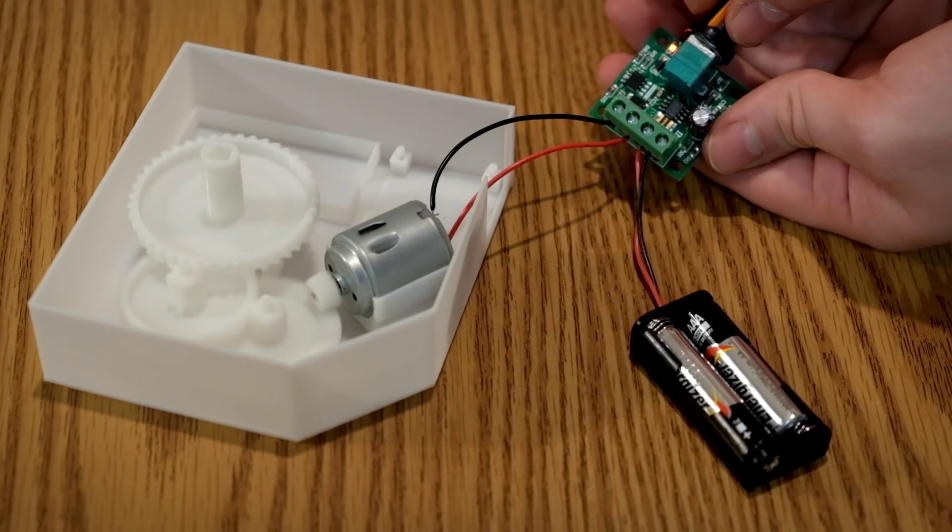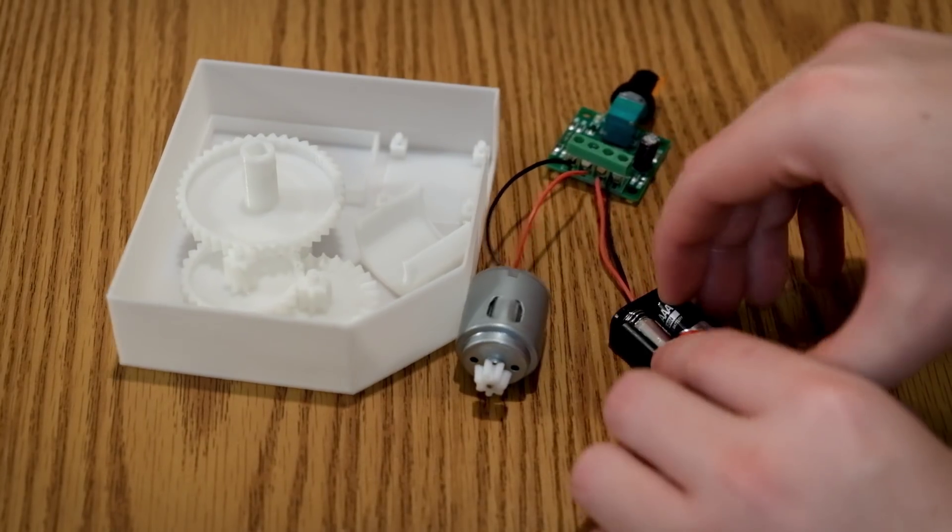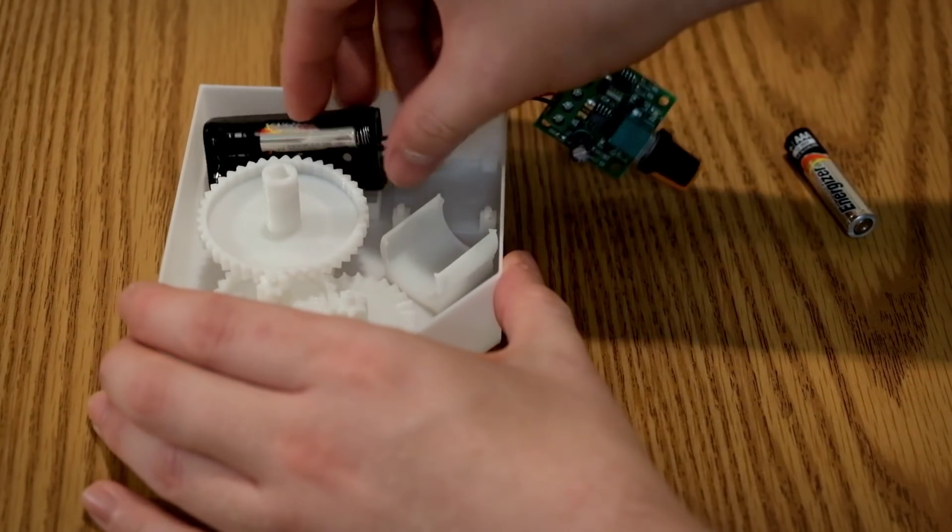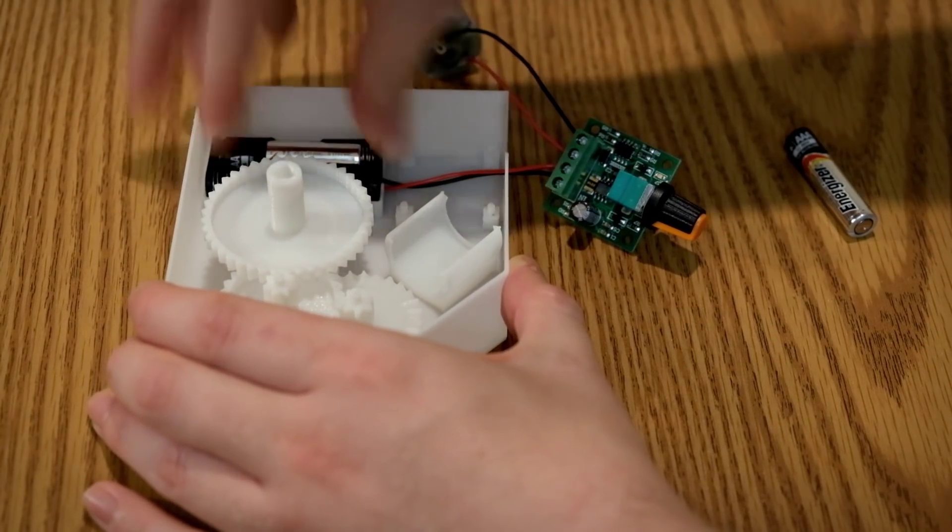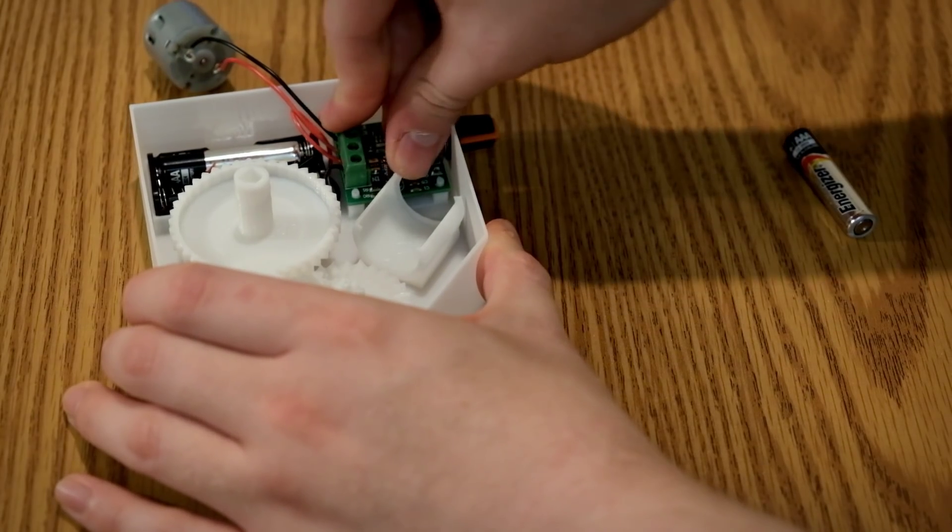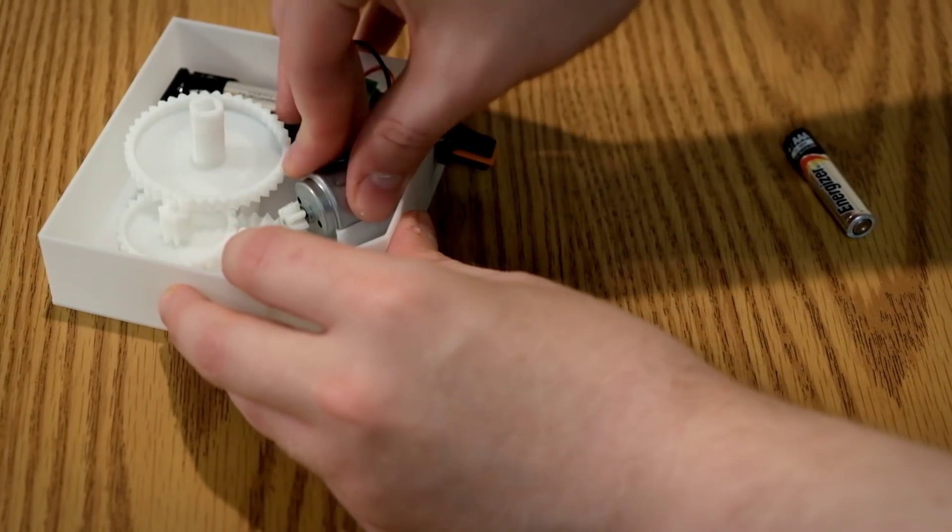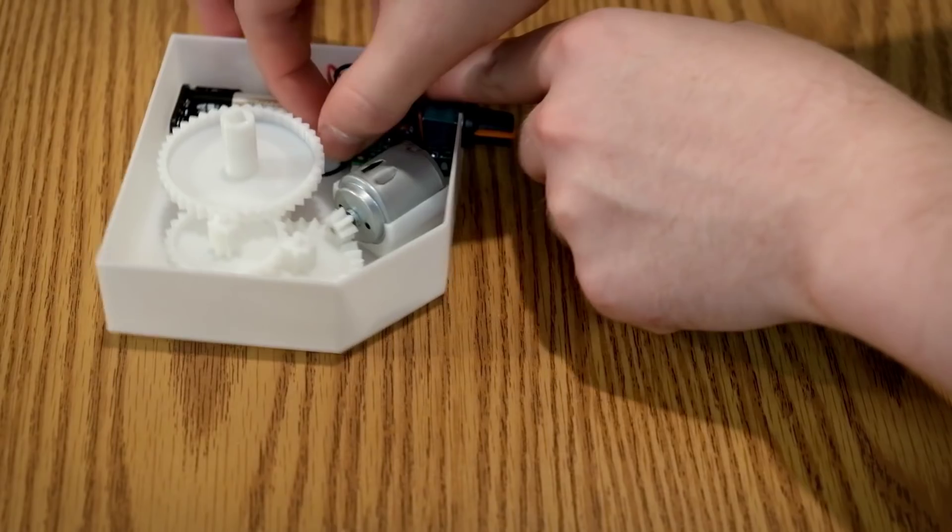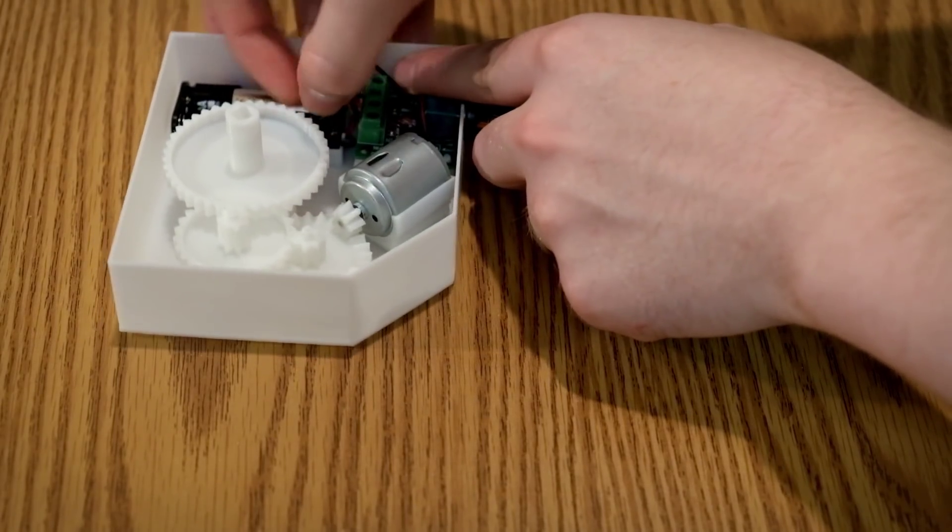Now it's time to add everything into the base. Let's remove a battery so we don't accidentally turn this on. Start with the battery holder. And then add the DC voltage controller. And then finally the motor. And make sure the wires don't interfere with the gears.